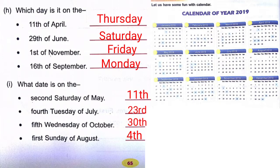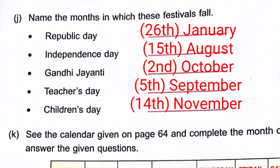(G) Name the month in which these festivals fall. Write only the name of the month. Republic Day is on 26th January — write 'January'. 15th August — write 'August'. 2nd October — write 'October'. Teachers' Day is in September. Children's Day is on 14th November — write 'November'.